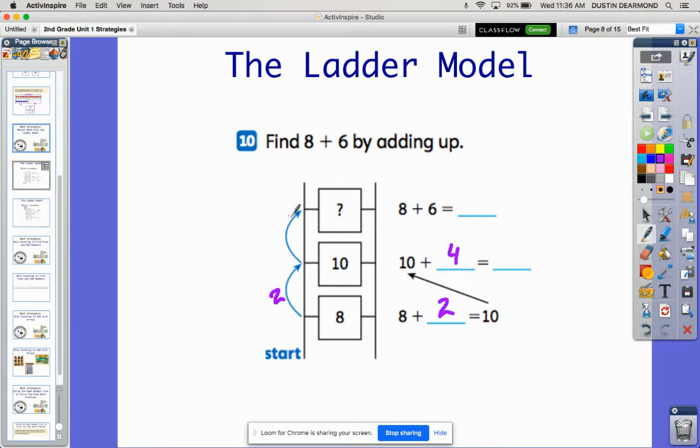I can say ten plus four more, which is what I'm showing you here. Ten plus four more is fourteen, and so eight plus six is fourteen because I jumped from eight to ten and then ten to fourteen for a total of six jumps.